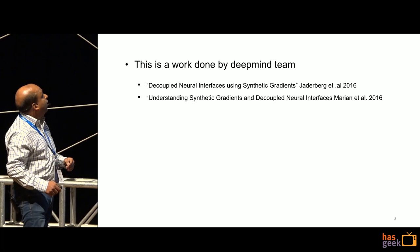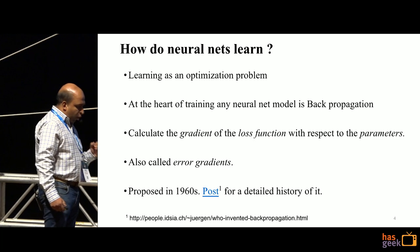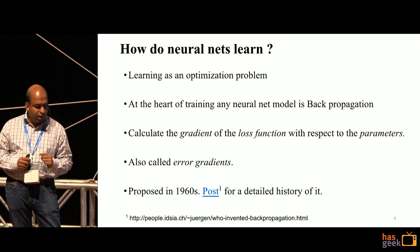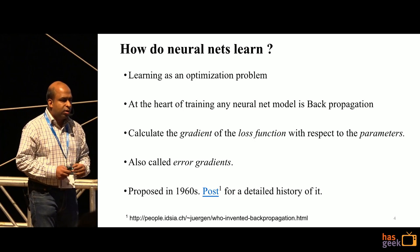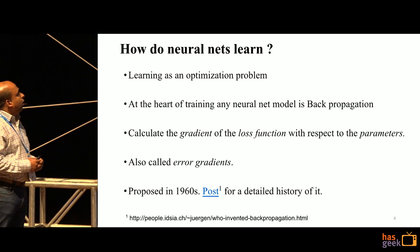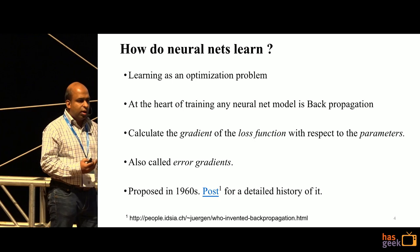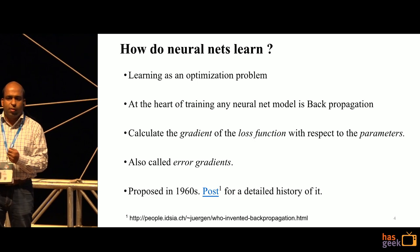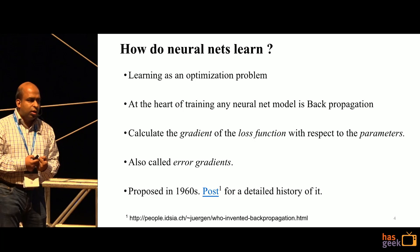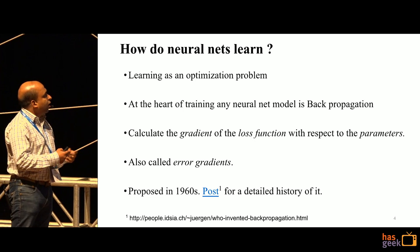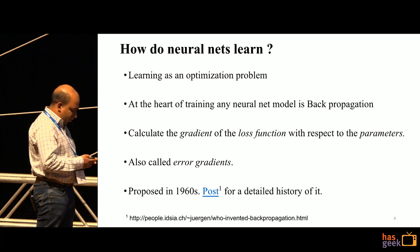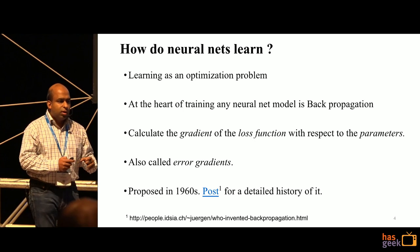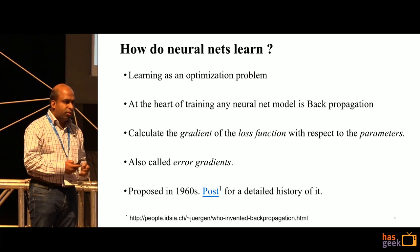How do neural nets learn? Ultimately we pose learning as an optimization problem, and at the heart of training any neural net is back propagation. The idea is: you have a loss function, you understand the gradient — how the loss is going to change when you change one of the variables by a small amount — and you use that as a signal to update your weights. This is also called error gradient. It was proposed way back, and it's difficult to say who was the original author.